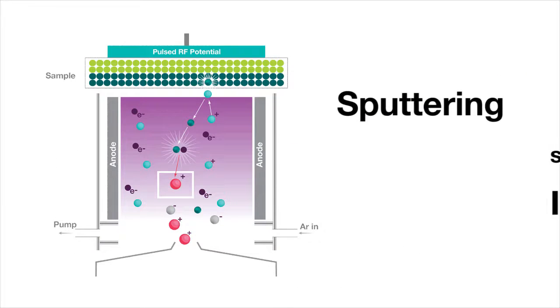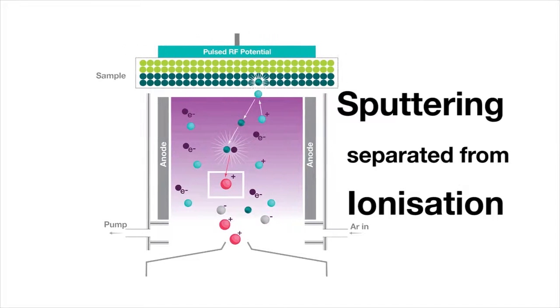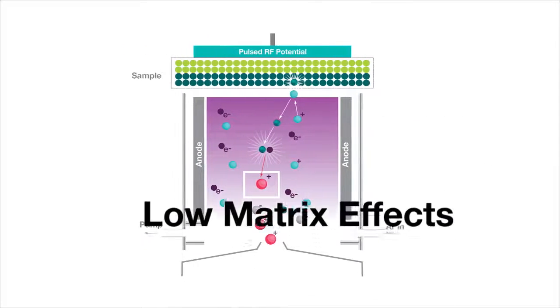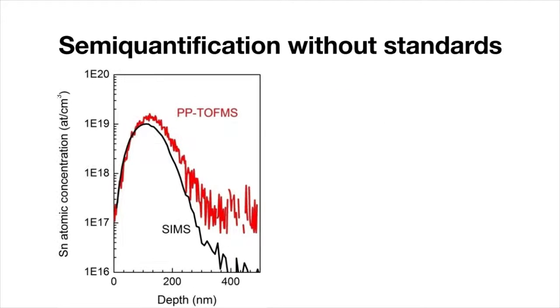In the glow-discharge plasma, sputtering and ionization are two separated processes. Matrix effects are thus low in PPTOF-MS analysis. Semi-quantification without the need of measuring reference samples is possible by simply using the ratio between the analyte signal and the signal of major elements.